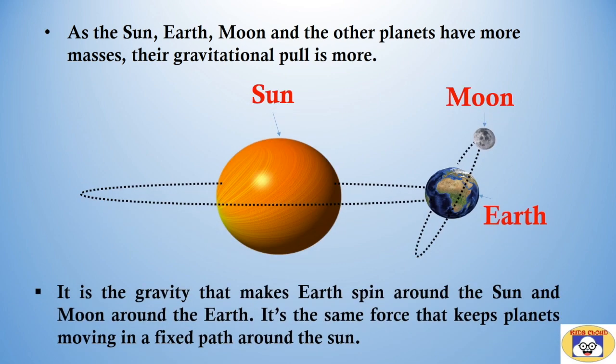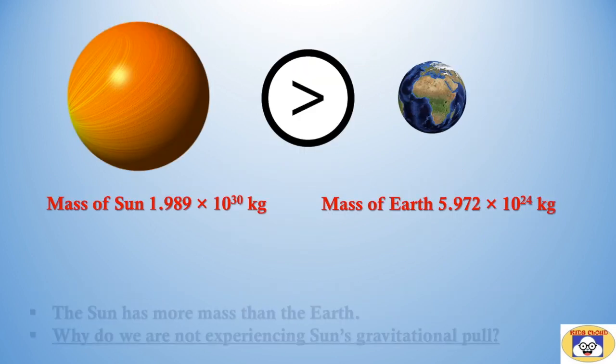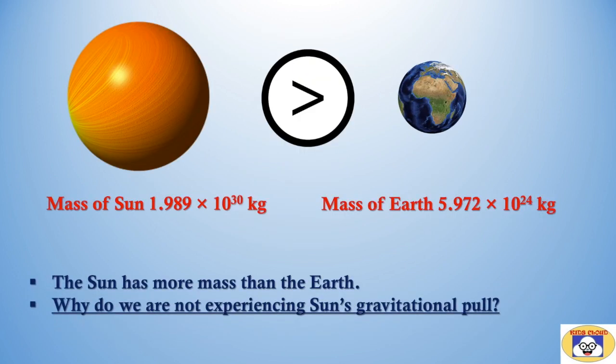It is the gravity that makes earth spin around the sun and moon around the earth. It's the same force that keeps planets moving in a fixed path around the sun.